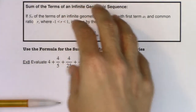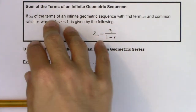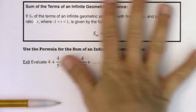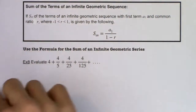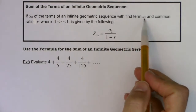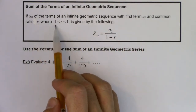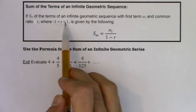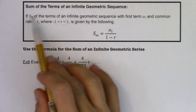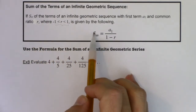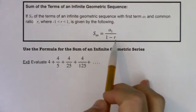In examples 6 and 7, we added the first 8 terms of a sequence. But now we're going to add infinitely many terms. S sub infinity of the terms of an infinite geometric sequence with first term a sub 1 and common ratio r — where, and this is key, r has to be between negative 1 and 1. If this is all met, then we know the infinite sum is a sub 1 over 1 minus r.